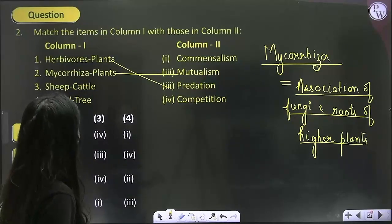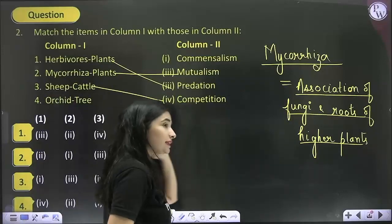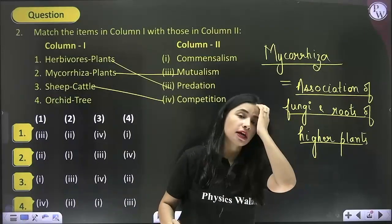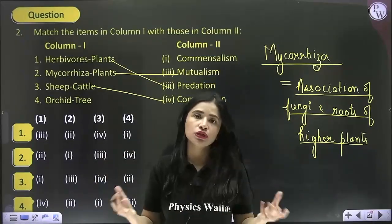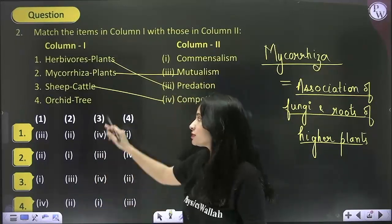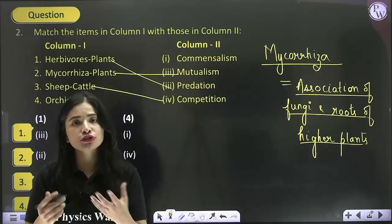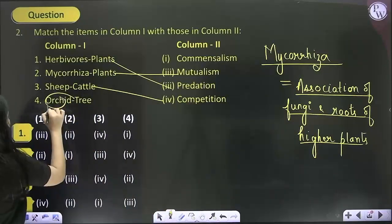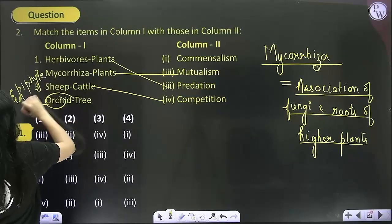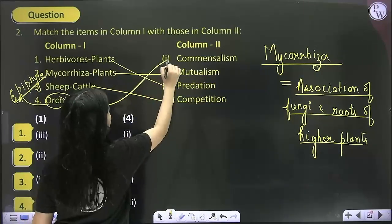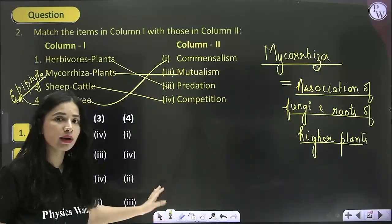Sheep and cattle show competition because cattle are also herbivores and sheep are also herbivores, so they compete with each other for the same resource — plants. Last is orchid and tree: orchids are epiphytes which grow on the branches of trees like mango. So orchid is an epiphyte — match four with one. Now all the matching is done; select the correct answer.